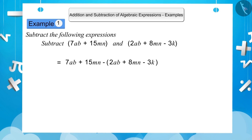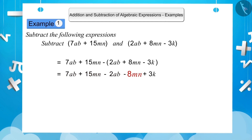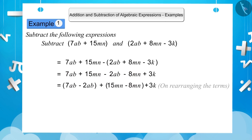Now let us remove the brackets. In subtraction, the sign of the terms changes once out of the bracket. So we get 7ab plus 15mn minus 2ab minus 8mn plus 3k. Rearranging like terms: 7ab and 2ab together, and 15mn and 8mn together, while 3k is an unlike term kept separate. By subtracting the like terms, we get 5ab plus 7mn plus 3k.